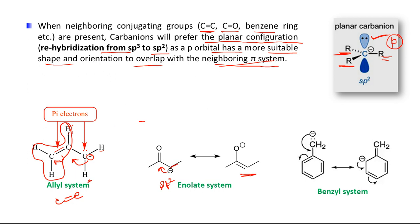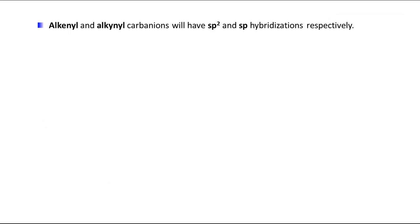In the allyl system a C=C double bond is present. In the enolate system, the carbanion has one methyl group, one hydrogen, and the R group contains C=O. In the third example, a C=C double bond is part of a benzene ring — just like the allyl system, conjugation is possible here too. So sp2 hybridization is favored in all these cases.